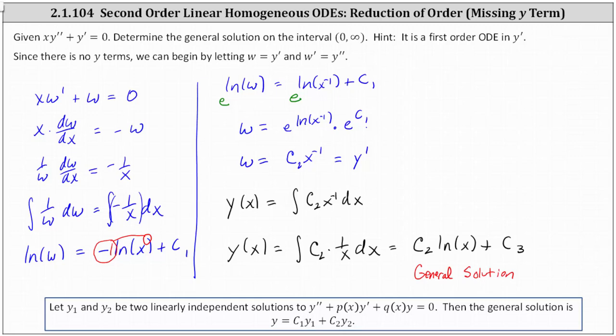So while we do have the general solution, I do want to point out, as we said at the beginning, one solution that we could have found was y₁ equals any constant, which could be c sub three. And then if we used the full technique of reduction of order, we could have found a second solution y₂ equals natural log x. And because these two functions are linearly independent, we know the general solution would be the linear combination of these two functions, which is the general solution that we found.